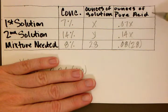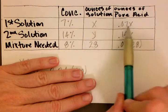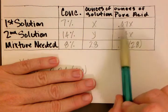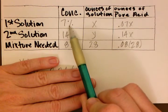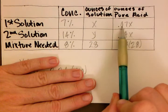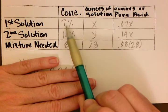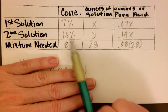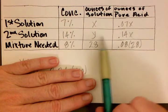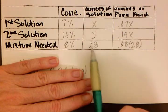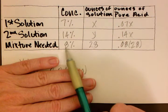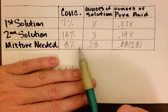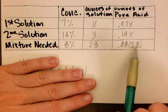In this column here, our ounces of pure acid, what we do is just multiply the two together. So we move our percentage over to a decimal. It goes from 7% to 0.07 and we multiply together so it's 0.07x. For the second solution, we multiply together and get 0.14y. And then for our mixture needed, which is the 8%, we multiply 0.08 times 28.